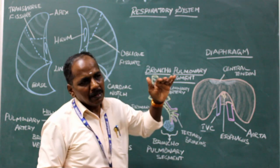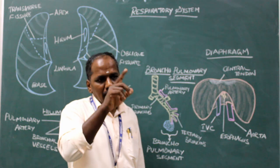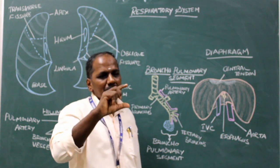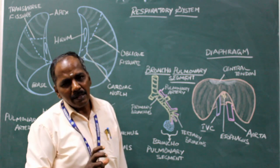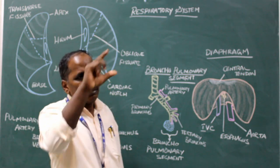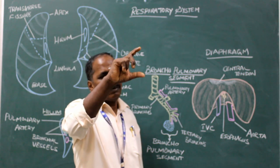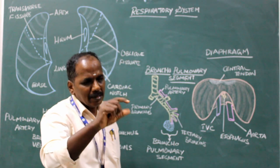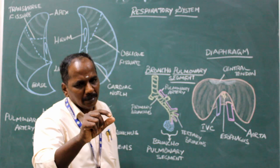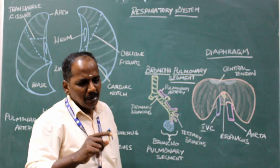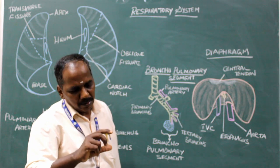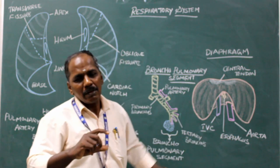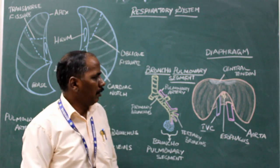To remember the opening levels: use the mnemonic D, G, O. D stands for deoxygenated blood — representing the inferior vena cava at T8. G stands for gastric — the esophagus at T10. O stands for oxygenated blood — the aorta, which carries oxygenated blood, at T12.